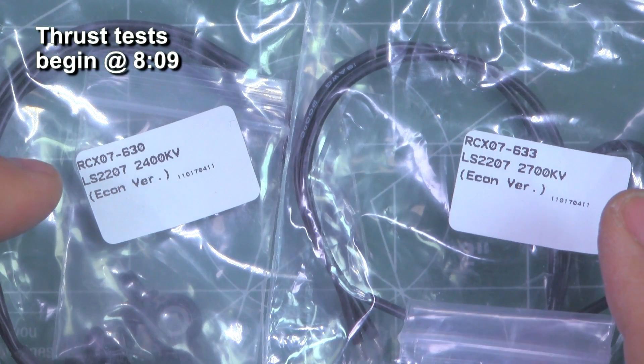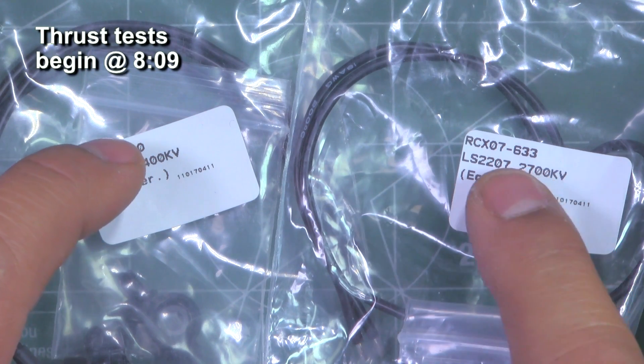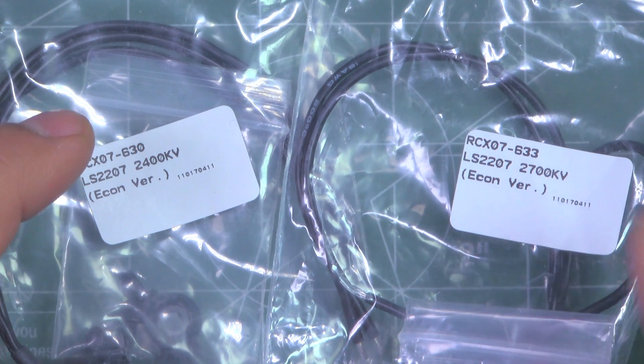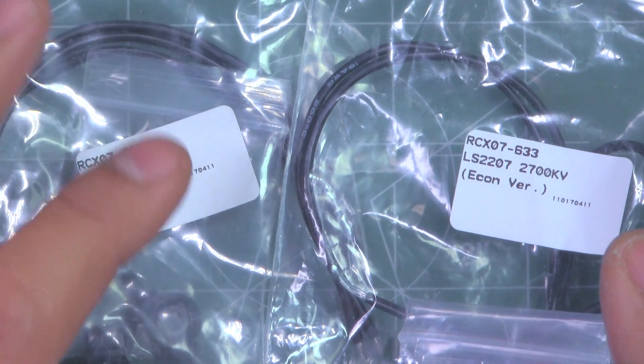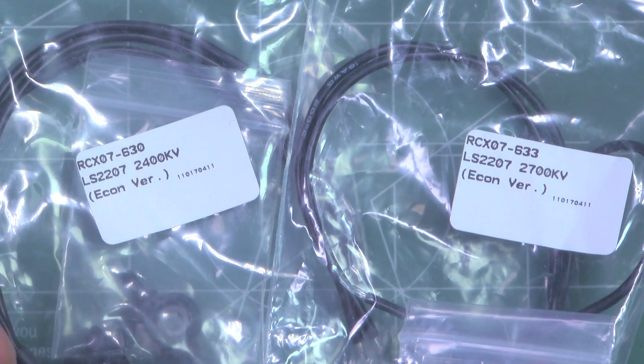Alright, so here we have two new motors from MyRC Mart. These are the RCX LS2207 2400KV and LS2207 2700KV. There's also a 1700KV version of the same motor, but I don't have that one, so only these two for testing.